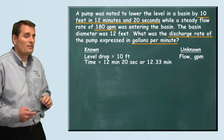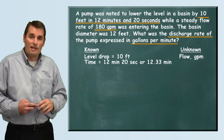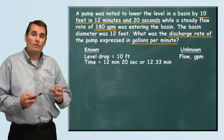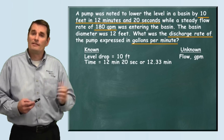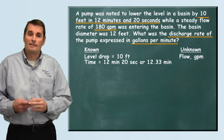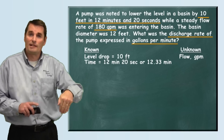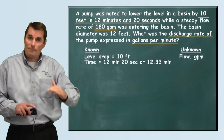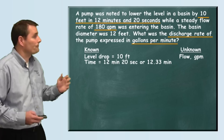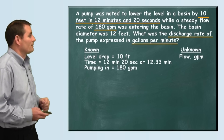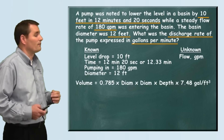We also see that there's 180 gallons per minute flowing into this basin. When we get to the end of our problem we're going to need to add in that 180 gallons per minute, because the pump discharging from this basin is pumping at a rate enough to overcome the 180 gallons per minute coming in and still drop the level 10 feet in 12.33 minutes. Our diameter is 12 feet, which we'll use in calculating the volume.